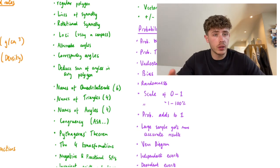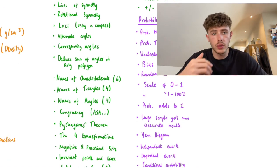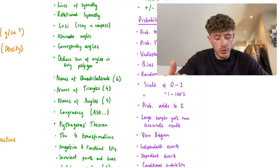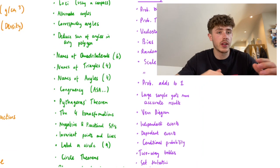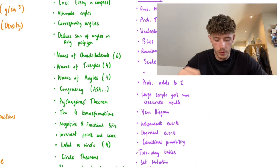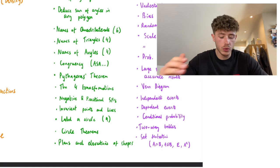Deducing the sum of angles in any polygon - so that's a triangle, quadrilateral, pentagon, and so on. Names of the quadrilaterals, there's six of them. Names of triangles, there's four of those. And names of different types of angles: acute, obtuse, and so on, that's four. Congruency and all the rules that follow with that.